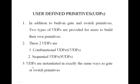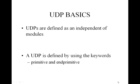Here you see how we instantiate a UDP — the same way we instantiate a gate primitive or switch primitive. It is like: and, space, then instantiation name, and within parentheses, first the output followed by the inputs. That is how we instantiate it. Now let us go to the next slide on UDP basics.